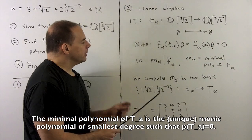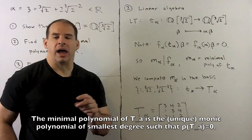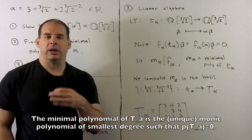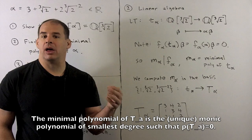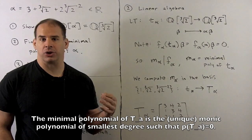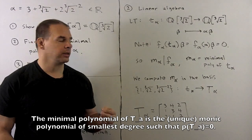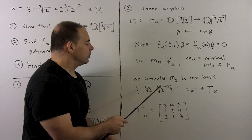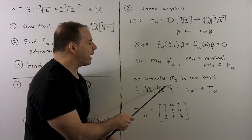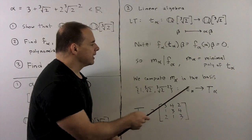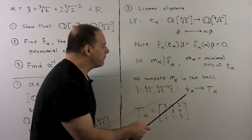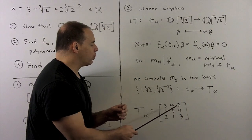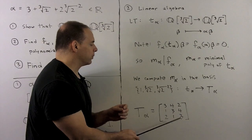To compute m sub alpha, we can do that in any basis — we get a matrix and compute the minimal polynomial of that matrix. Using the basis 1, cube root of 2, cube root of 2 squared, we get the matrix capital T sub alpha given as: 3, 4, 2 / 1, 3, 4 / 2, 1, 3.